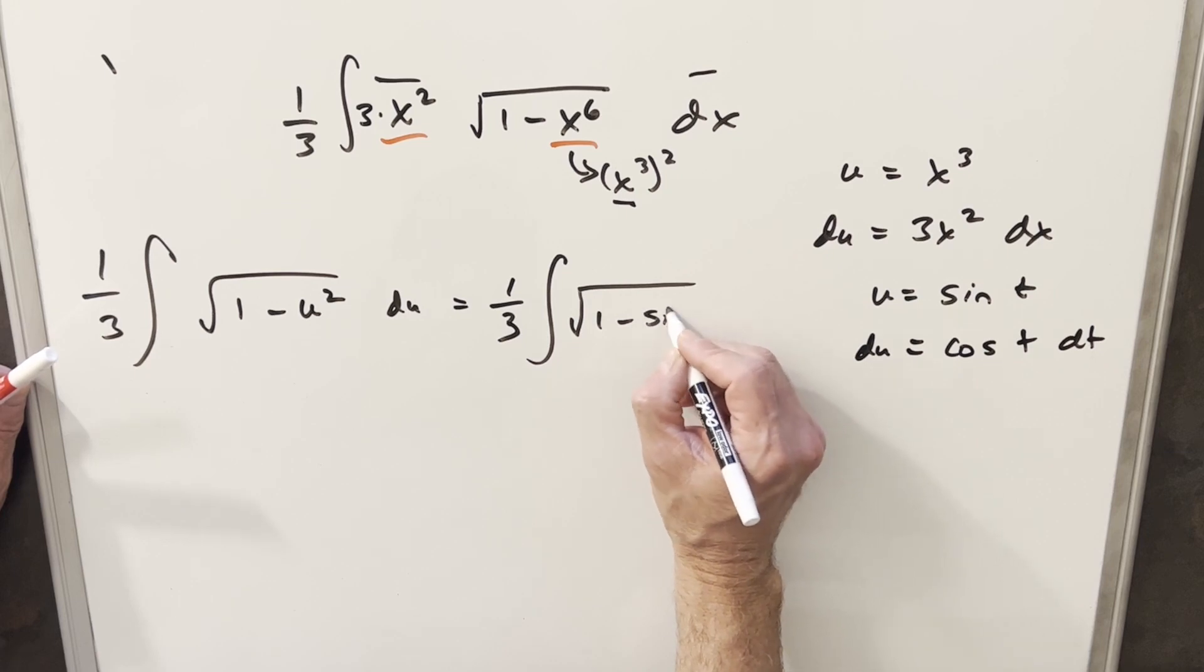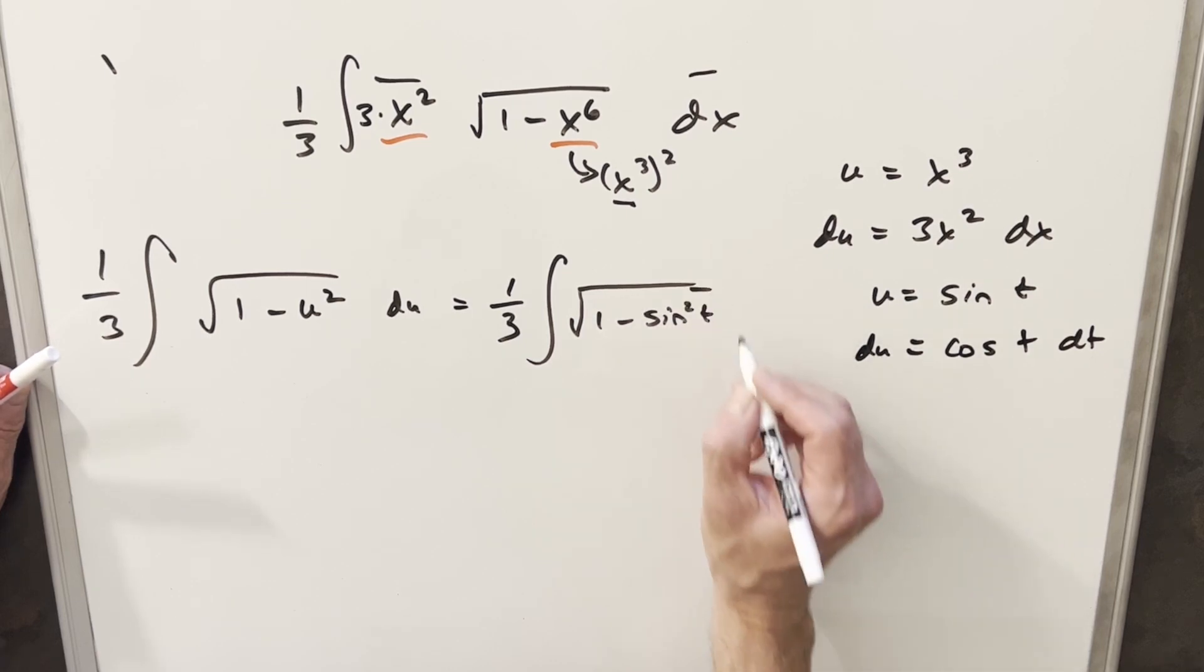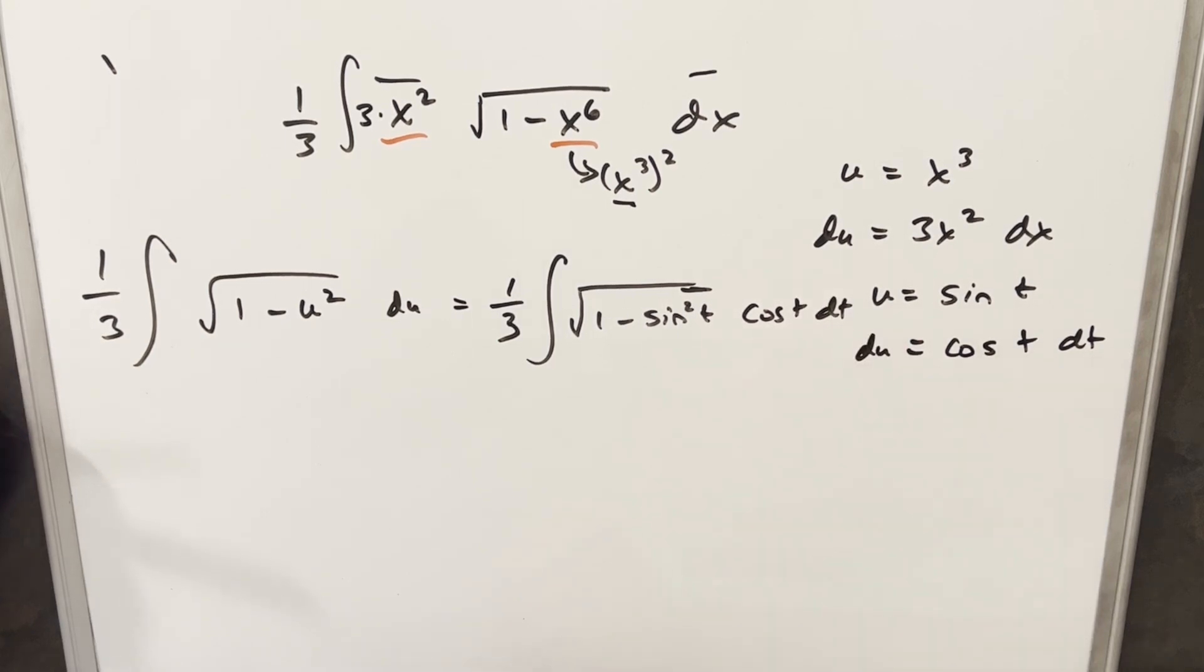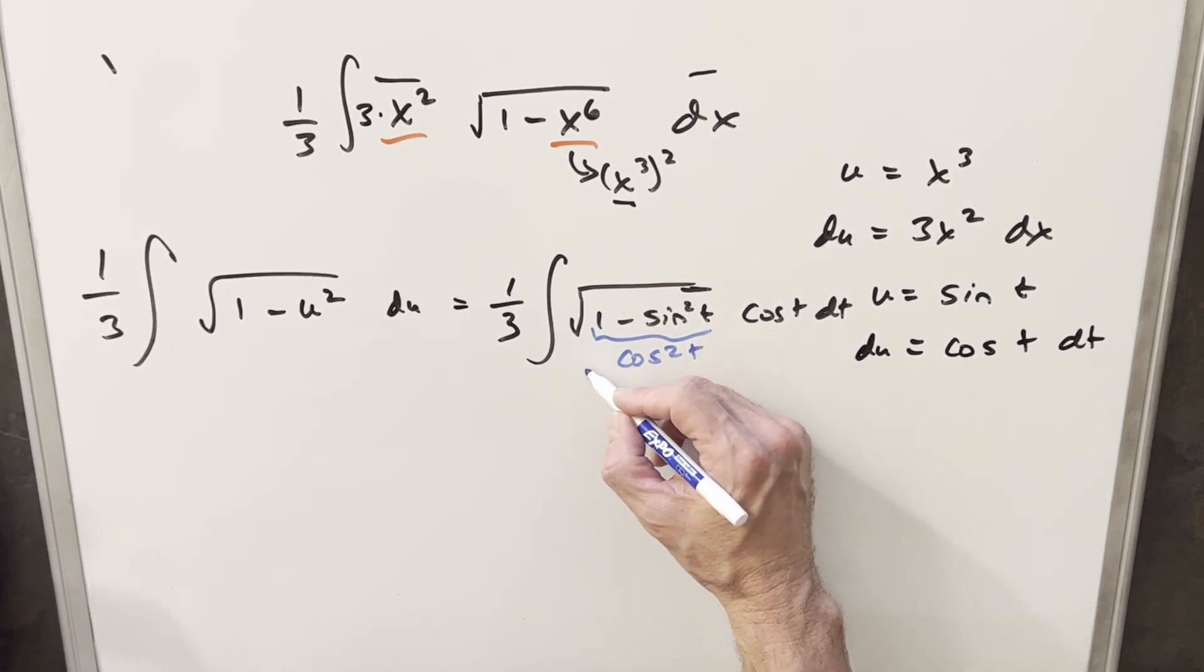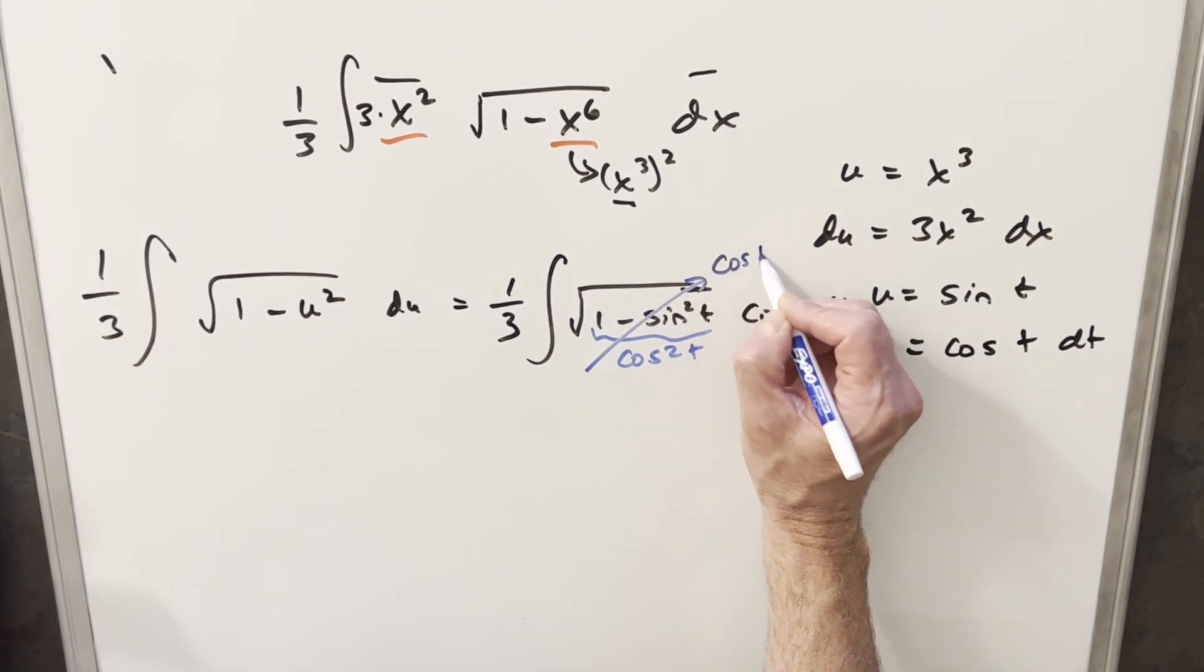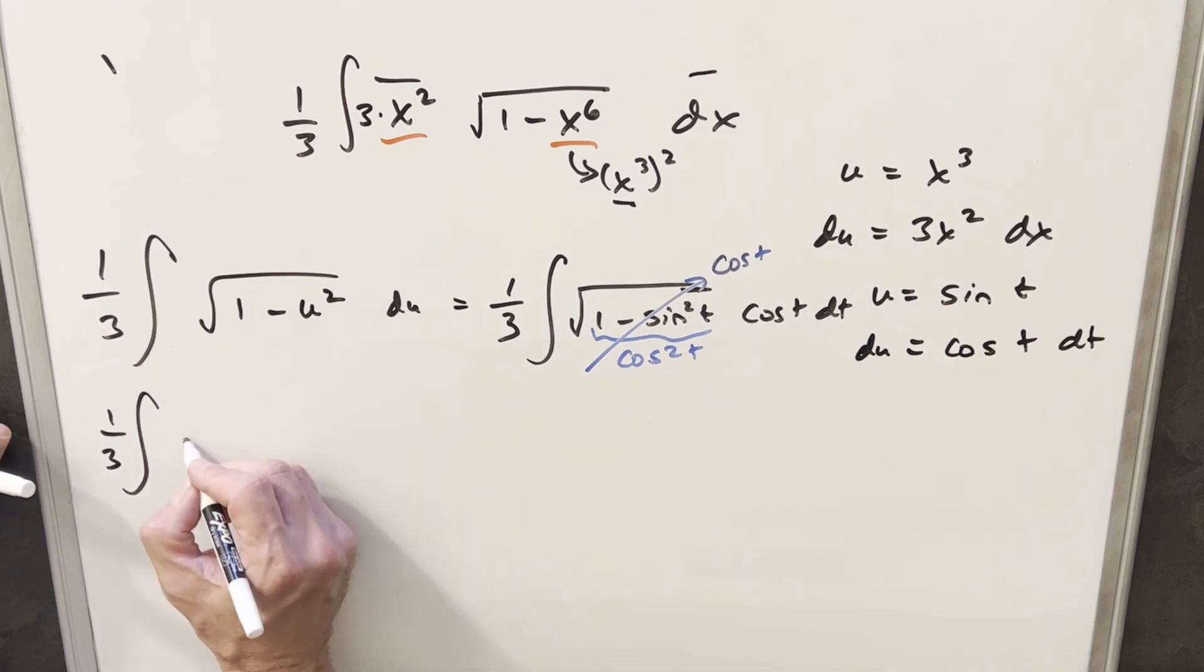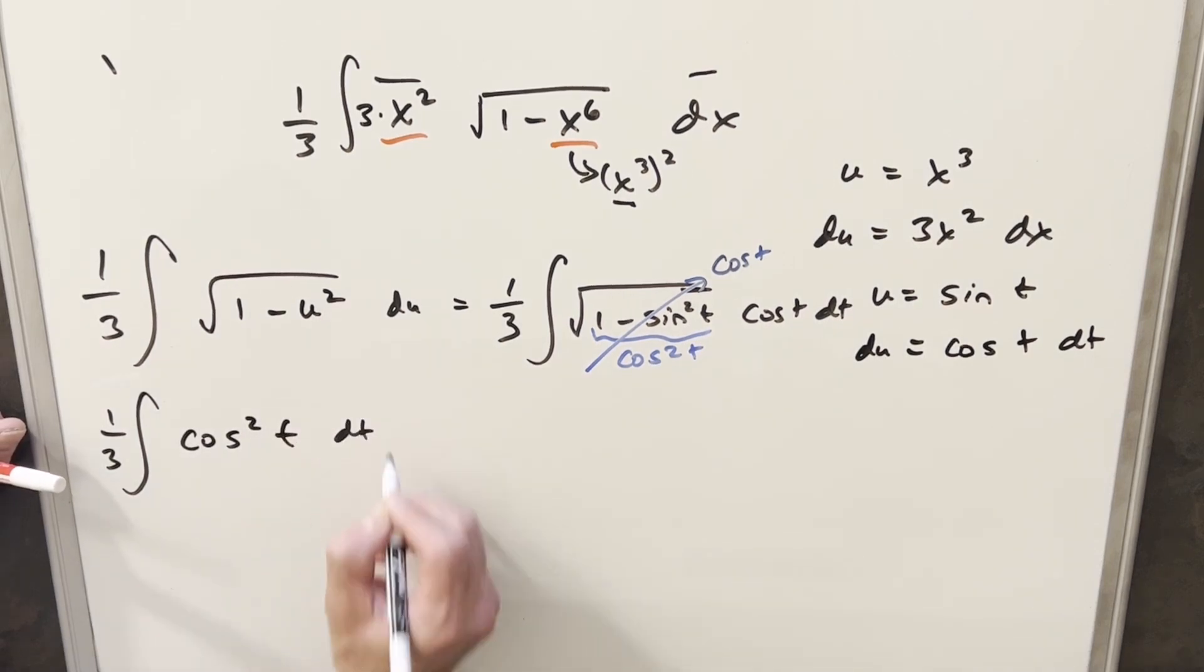So when I do this, inside the radical, I'm going to have 1 minus sine squared t. And then for our du, we're going to have this cosine of t dt. Now here for 1 minus sine squared t, I can actually write this as cosine squared t. So that's inside the radical. So this piece here is actually all going to be just cosine of t. So when I rewrite this, we're going to have our 1 third up front, cosine t times cosine t. This is going to become cosine squared t dt.